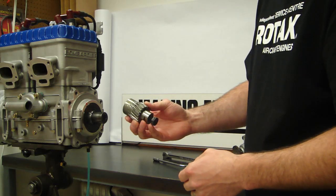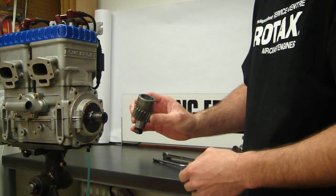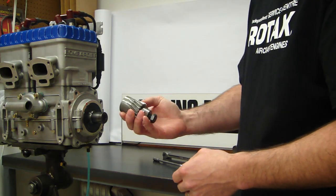And that is the complete removal of the Rotax type B gearbox from a 2 cycle Rotax aircraft engine.